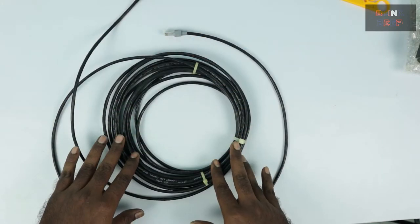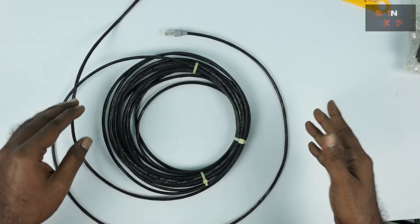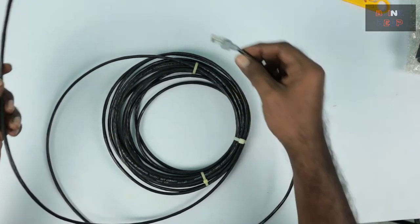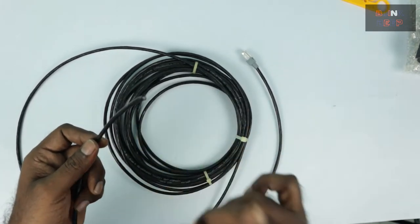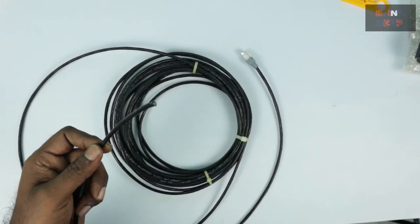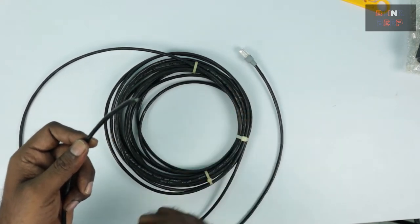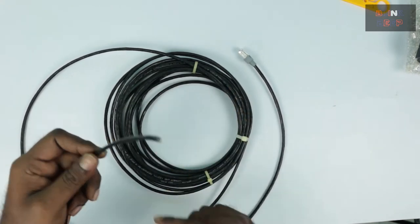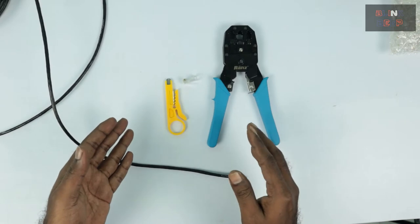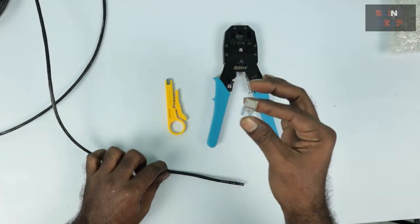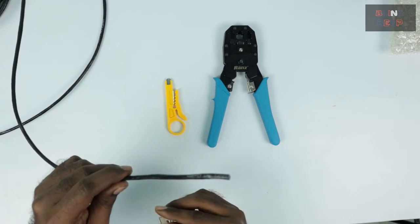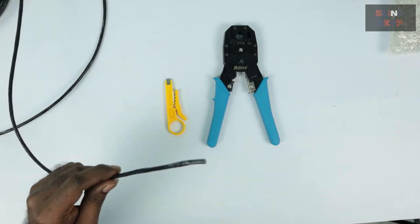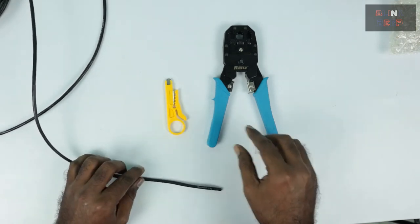Here is the cable that I will be using now for doing the demo. So as you see, one end already has the connector and the other end doesn't have the connector, so this is where we are going to put the pin and see how it works and we will test it right away. These are the items that we are going to need to put this connector to this end of the cable.